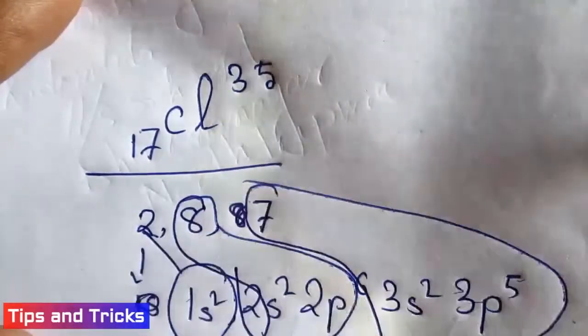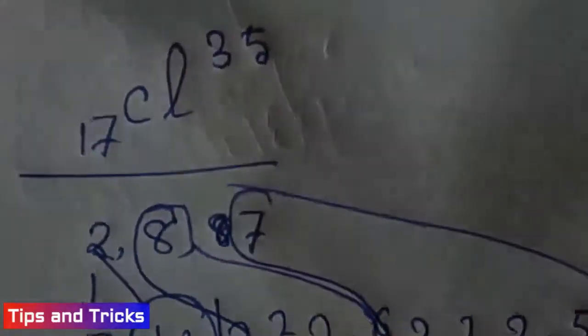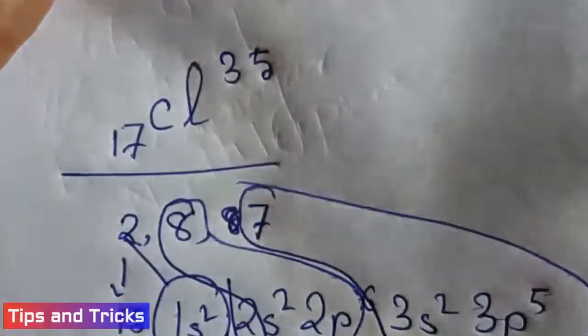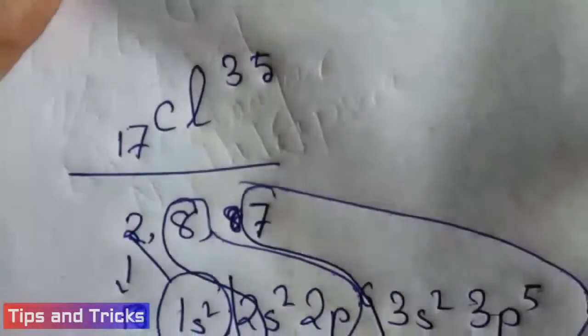8 electrons are distributed as 2s² plus 2p⁶, which equals 8. And the last 7 electrons are distributed as 3s² and 3p⁵. That's it.